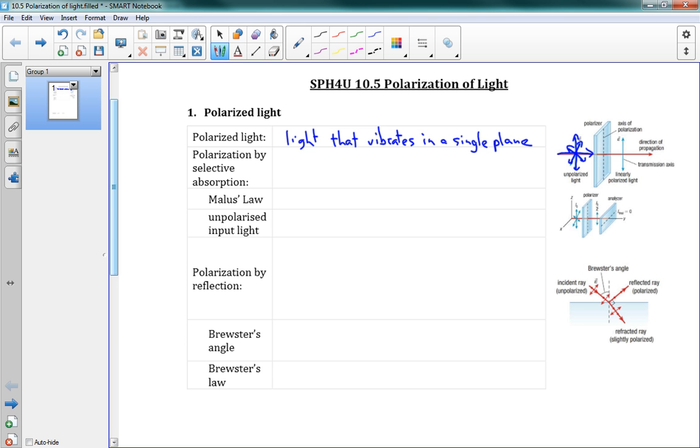But when we send it through something like a polarizer here, a polarizer is something that will block any light that is not vibrating in a certain direction. So you can see here, we have our unpolarized light, and it goes through our polarizer. And the only thing that gets through is light that's vibrating up and down like this. So that's our linearly polarized light.